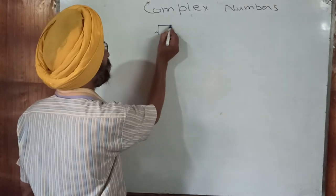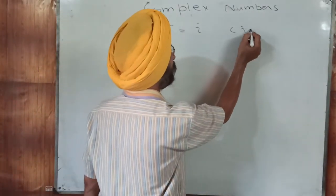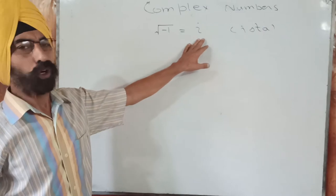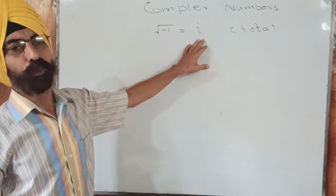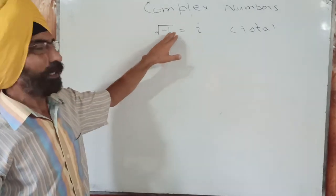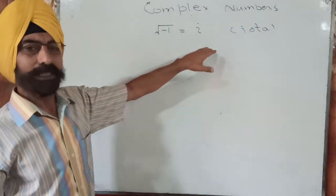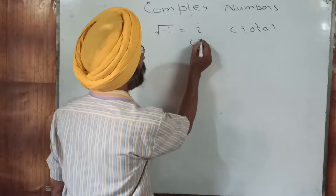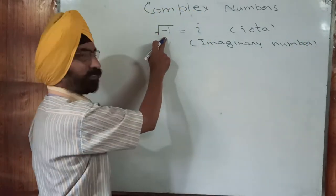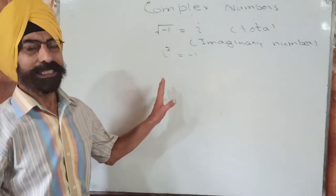So what we do is we assume the square root of minus one to be denoted by the symbol iota. We call it iota, and it is an imaginary number — it does not exist. Because the product of a number with itself is always positive whether the number is positive or negative. So if iota is positive then iota squared is positive, and if iota is negative the square is again positive. So the square root of a negative number does not exist, and we assume it to be denoted by iota. So if under root of minus one equals iota, squaring both sides gives iota squared equal to minus one.